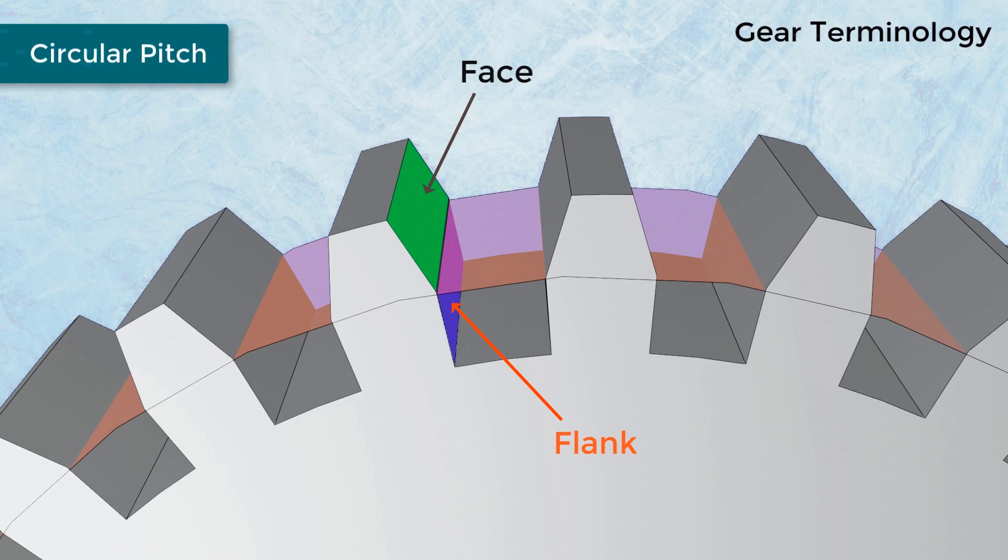Circular Pitch: The distance between a point on a tooth to the same point on an adjacent tooth, measured along the circumference of the pitch circle, is known as circular pitch. Circular pitch is denoted by pc and given by: pc = π × pitch circle diameter ÷ number of teeth.